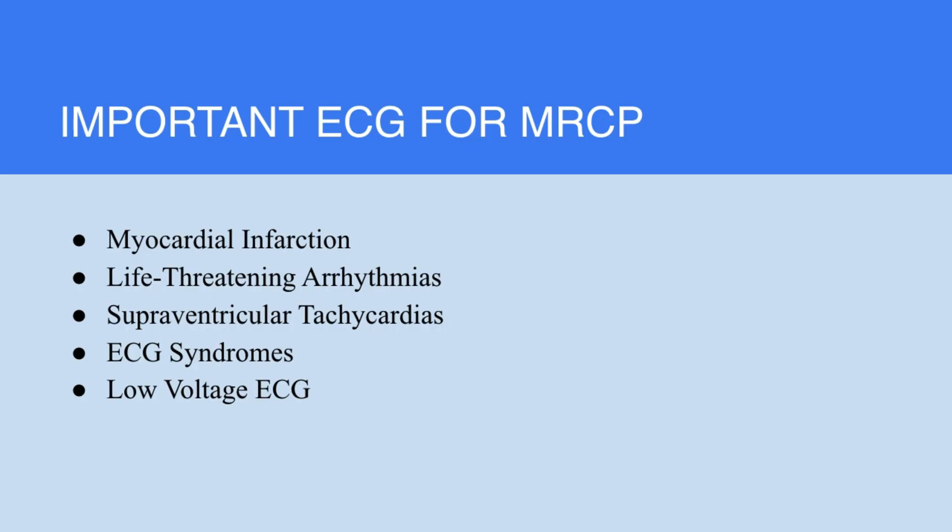The important ECGs that come up frequently in the MRCP exams include myocardial infarctions with all its types and distributions, the life-threatening arrhythmias like ventricular tachycardia, ventricular fibrillation, torsades de pointes, and then the supraventricular tachycardias including all the re-entrant tachycardias, the atrial fibrillation and atrial flutter, some ECG syndromes which are very famous for the MRCP, and low voltage ECG displaying features of disease like hypothyroidism, hypothermia, cardiac tamponade, pericardial effusions, and so forth.